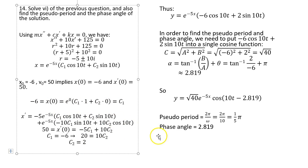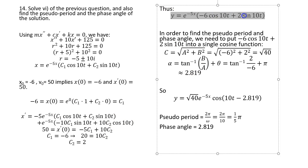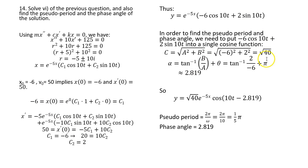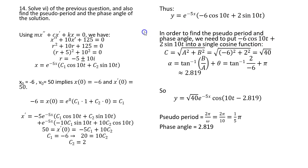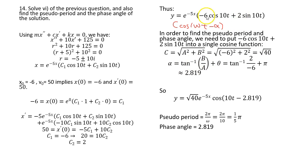Plug in the initial conditions to compute c1 and c2. After substituting those values back in, you get the specific solution. The key step is combining the two sinusoidal functions into a single cosine function of the form c·cos(ωt - α), where c = √(a² + b²) and α = arctan(b/a).